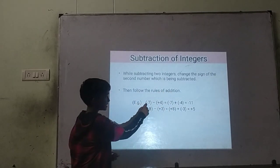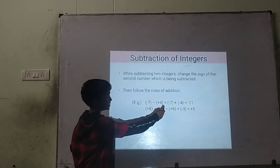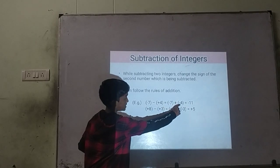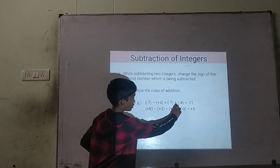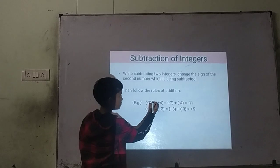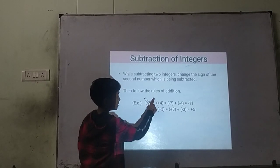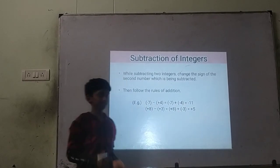For example, minus 7 minus plus 4. We change the sign of plus 4 to minus 4. So we get minus 7 plus minus 4, which gives us minus 11.